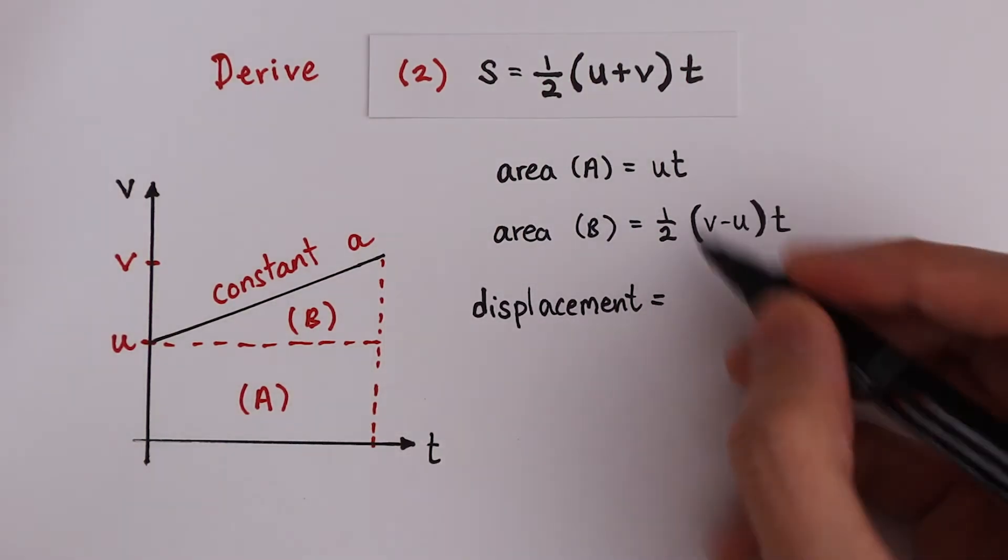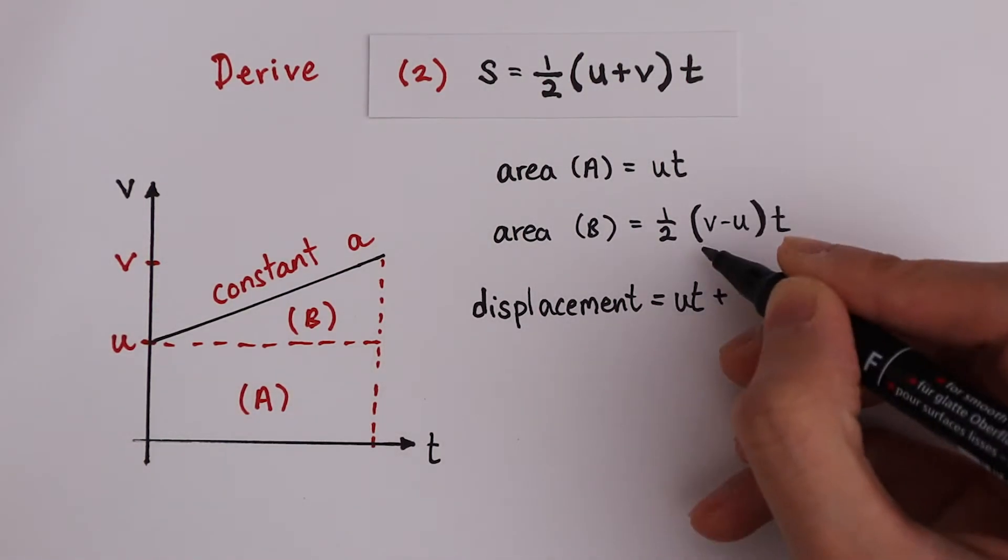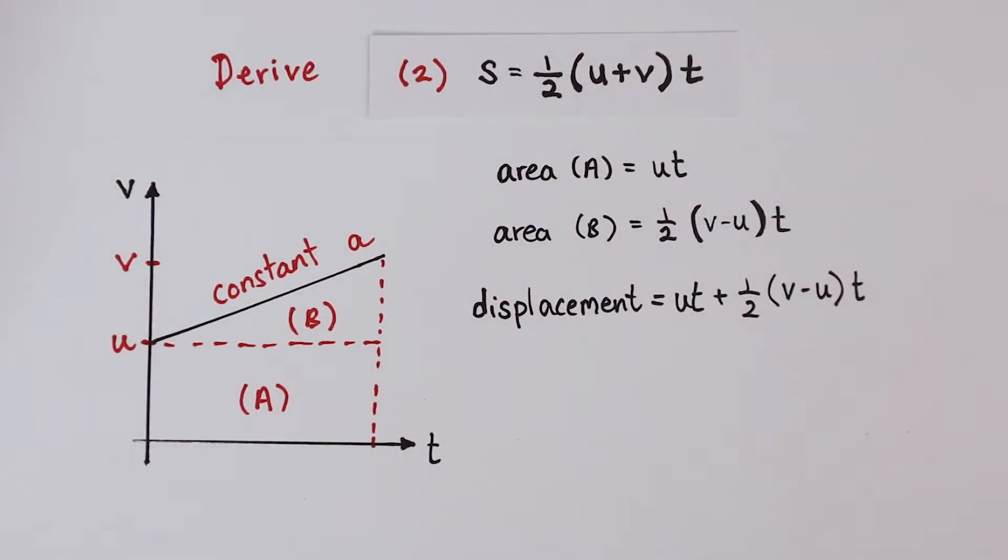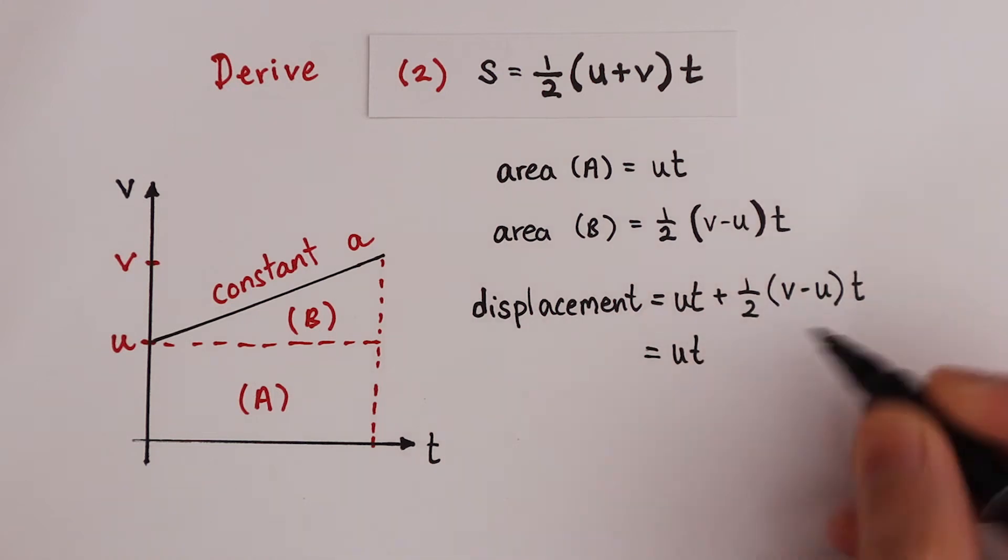So the total displacement is the sum of these two areas. We get ut plus half bracket v minus u times t. Expand these brackets to simplify it.